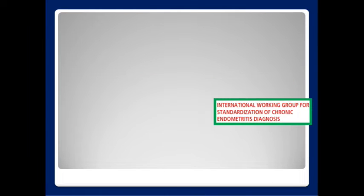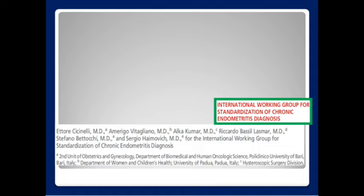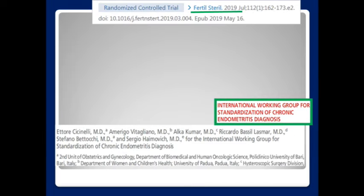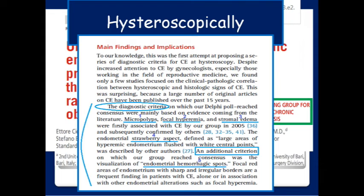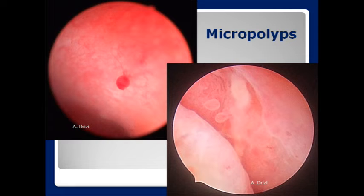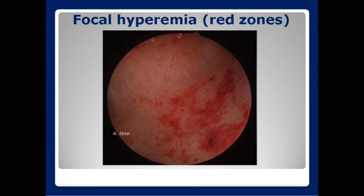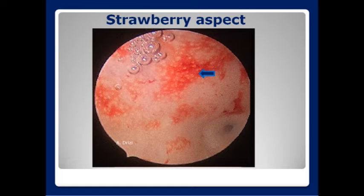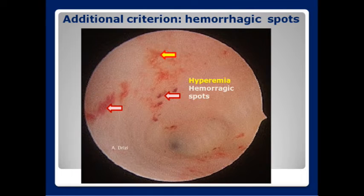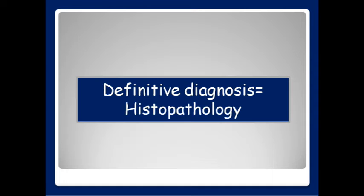Hysteroscopically, the International Working Group for Standardization of Chronic Endometritis Diagnosis published in Fertility and Sterility by mid-2019 unified diagnostic criteria for chronic endometritis at hysteroscopy. The hysteroscopic diagnostic criteria are: micropolyps, focal hyperemia, stromal edema, strawberry aspect, plus an additional criterion of hemorrhagic spots.